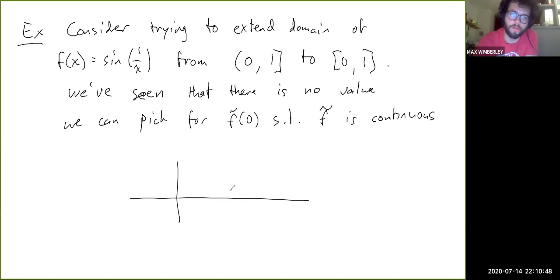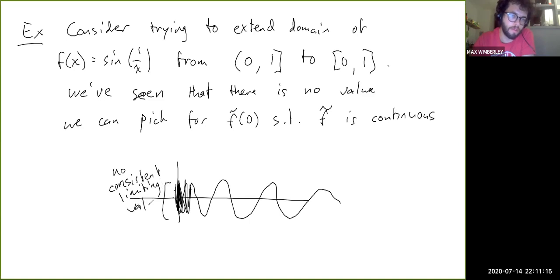Because the picture, remember, is that we have this insane oscillation, and then it kind of broadens out, but it gets like thicker and thicker. So there's no consistent limiting value as you get close to 0. Even though this is continuous, f is continuous on (0,1].